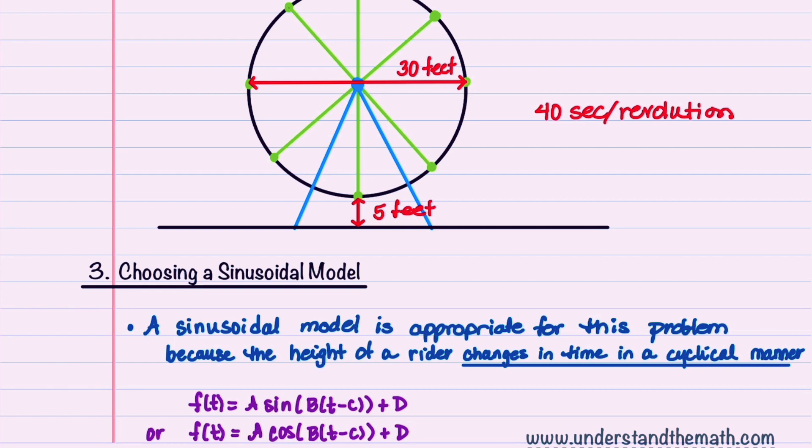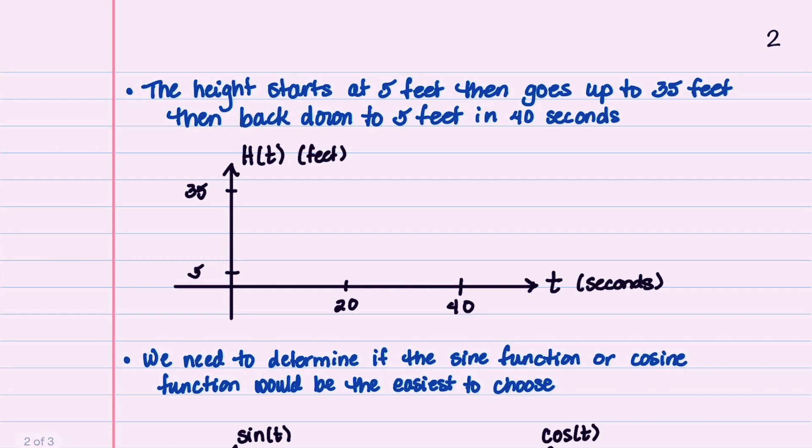Our sinusoidal function can be the sine function or the cosine function. To determine which to choose, we'll need to look at the height of the rider during one entire revolution. The height starts at 5 feet, then goes up to 35 feet, and then back down to 5 feet, and that all takes 40 seconds.